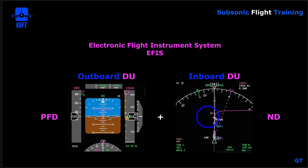On the navigation display there are four modes. We happen to be in the map mode right now. The map mode represents a moving map representation of our route of flight, and of course the ND or navigation display has symbology that we'll talk about when we get into that portion of the training.